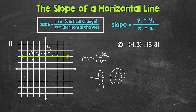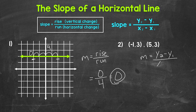Let's move on to number two, where we are going to find the slope of the line from two points — just the coordinates, no graph. We use the formula: slope equals y2 minus y1 over x2 minus x1. y2 minus y1 gives us the rise, and x2 minus x1 gives us the run. For the point negative one, three — this is our first point, so x1 is negative one and y1 is three.